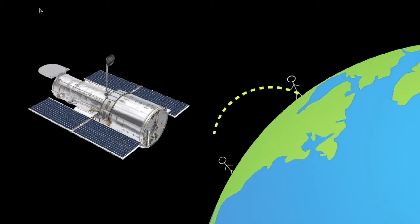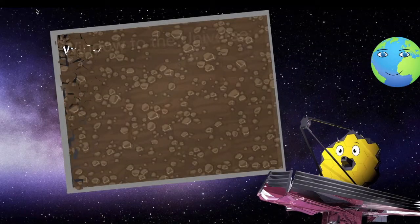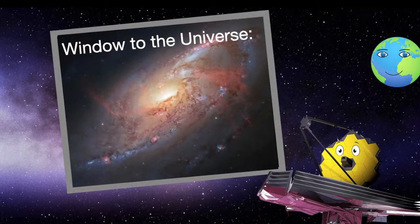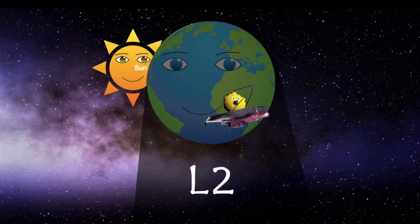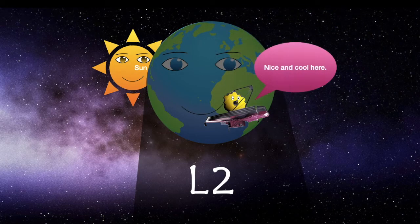Unlike Hubble, which faces noise given by the Earth, the James Webb will have a cleaner view of the universe. Staying at the second Lagrange point also allows the James Webb Space Telescope to hide in the shadow of the Earth, cooling it.